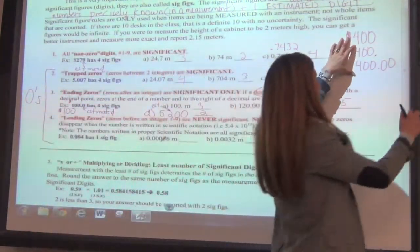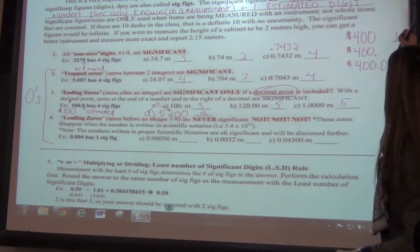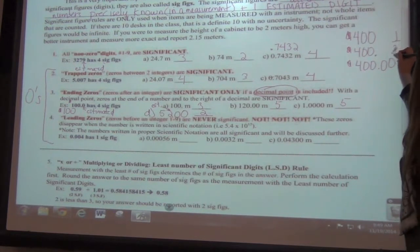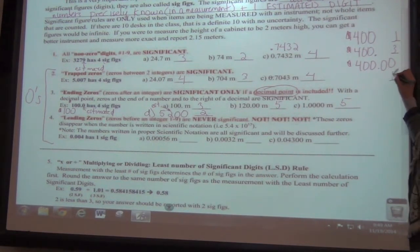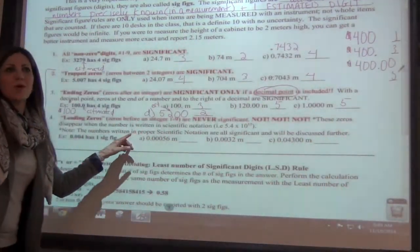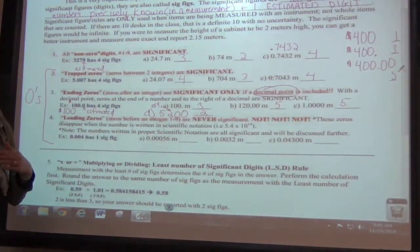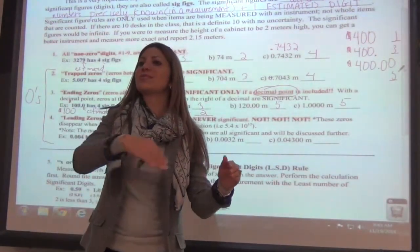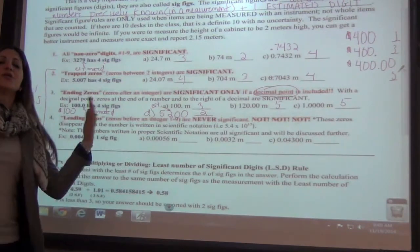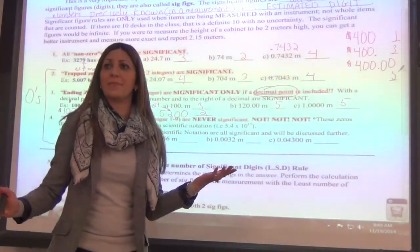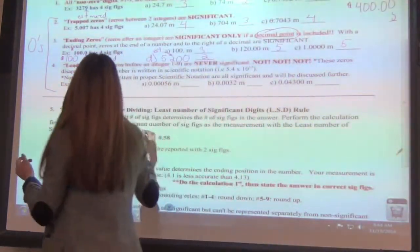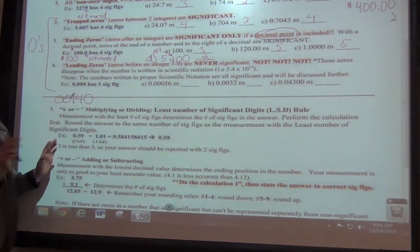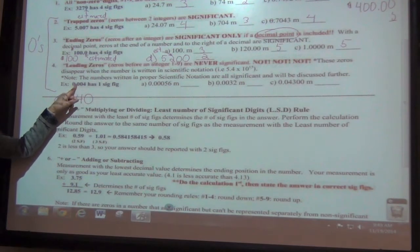Going back to the earlier examples: $400 with no decimal would be one sig fig; $400. with a decimal would be three sig figs; $400.00 would be five sig figs. Last rule — it's the easiest one. Leading zeros, meaning zeros on the left, are never, ever significant. There is never an exception. If your number starts with zeros, those zeros do not count. The reason is you can switch into scientific notation and get rid of them. Would you ever write 140 with leading zeros? No — those would never count.